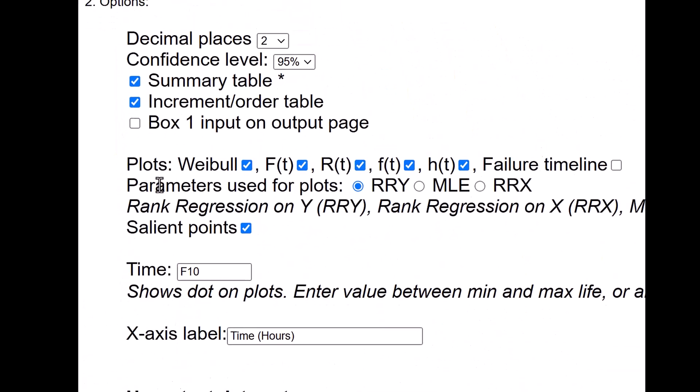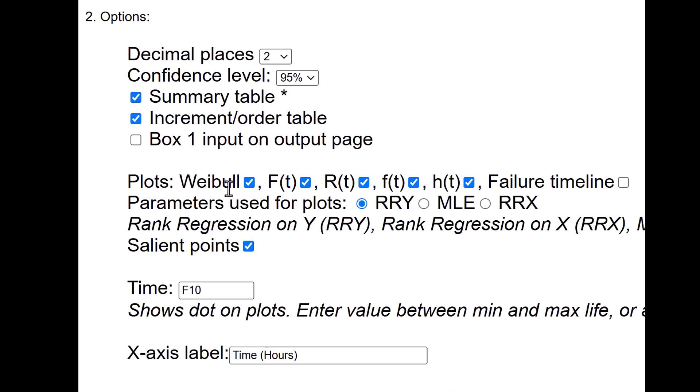Add in plots. Check all the plots: Weibull capital F(t) which is the cumulative failure function, reliability R(t) which is the survival function, small f(t) which is the probability density function, h(t) is the hazard function. Failure timeline also you can put.